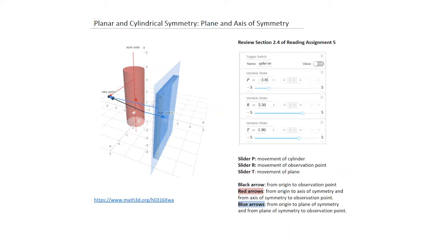Let's first discuss the notion of symmetry. The types of problems we're dealing with here are limited, so we'll look at planar symmetry and cylindrical symmetry. When we deal with planar symmetry, we're talking about a plane of symmetry; with cylindrical symmetry, we're dealing with an axis of symmetry. In this problem, I've shown a cylinder and a plate with a symmetry plane shown as a lightly blue-shaded region, and an axis of symmetry passing through the center of the cylinder. You can play with the P, R, and T sliders — P governs the movement of the cylinder, R is the movement of the observation point, and T is the movement of the plane.